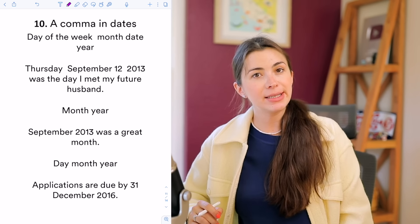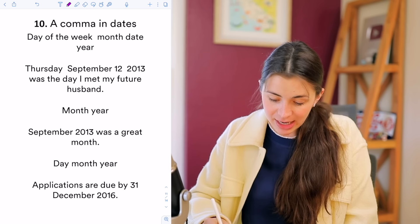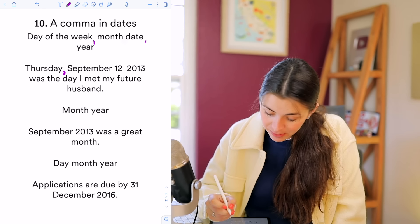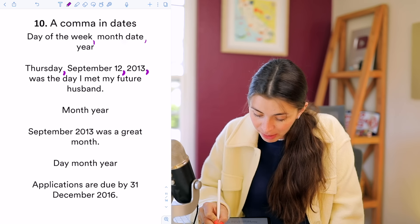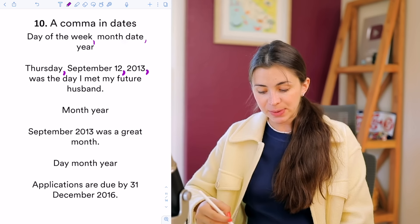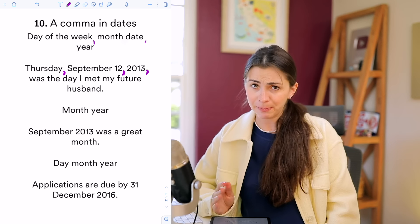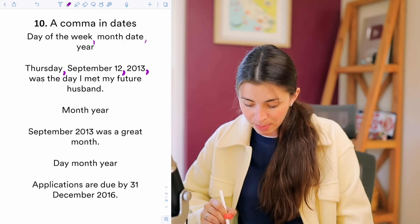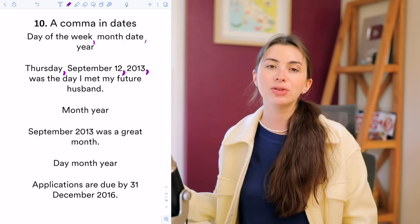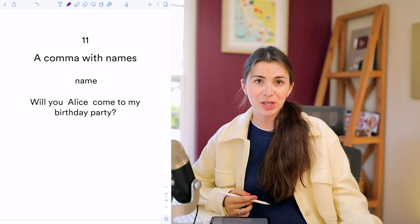We also put commas in dates. When you have several attributes — day of week, month, date, and year — you put commas between them. Example: 'Thursday, September 12, 2013, was the day I met my future husband' — and a comma after the year as well. However, if you only have month and year — 'September 2013 was a great month' — no commas are needed. Also, if you use the day-month-year format — 'Applications are due by 31st of December 2016' — no commas required.